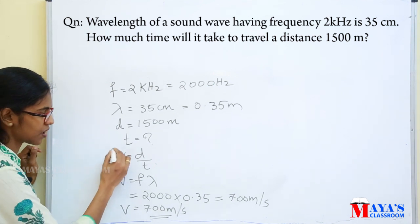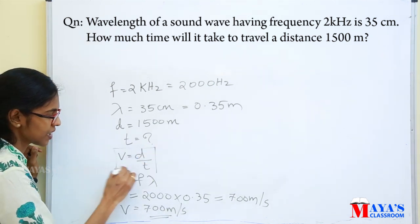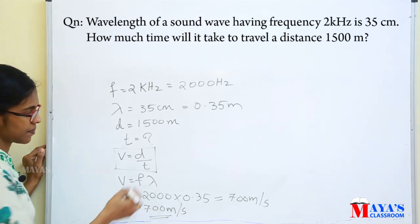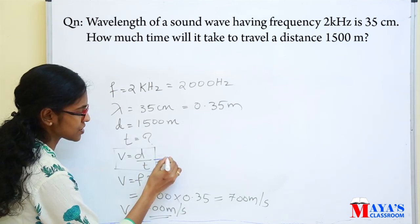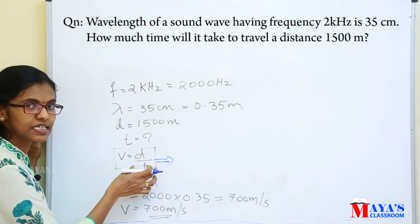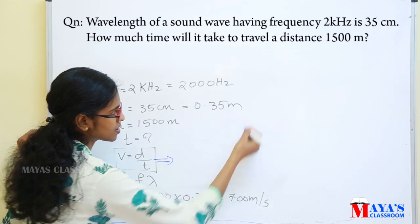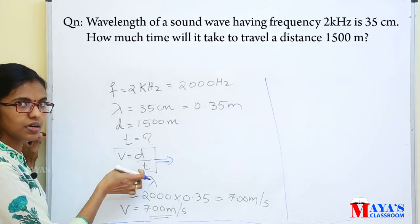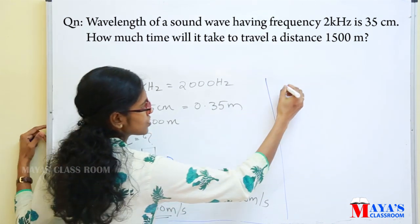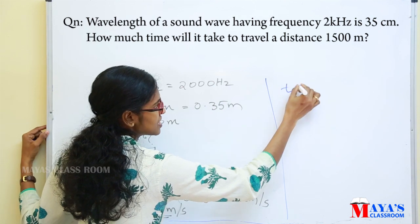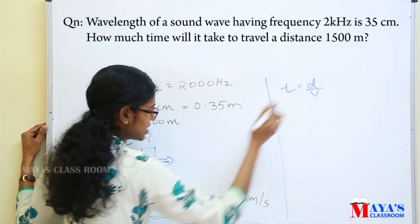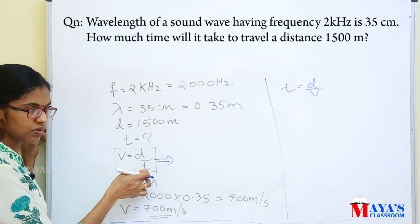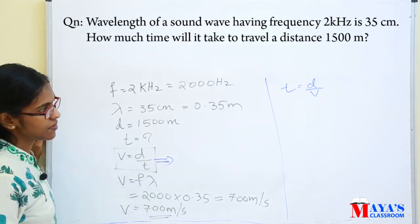Using the equation V equals d divided by t, we rearrange to get t equals d divided by V.